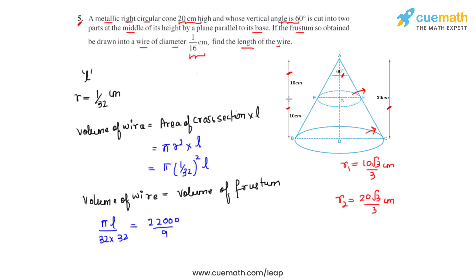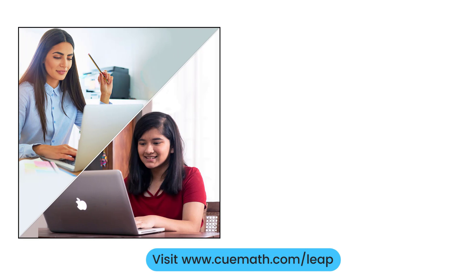Rearranging the terms, we get the length of the wire to be equal to 796444.44 centimeters. Converting to meters, the answer is 7964.44 meters. This is how we solve this question.